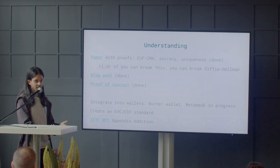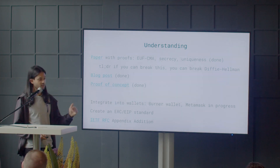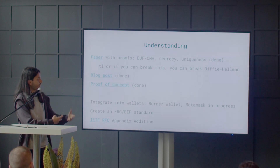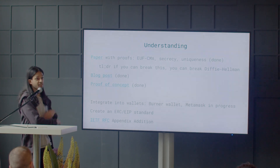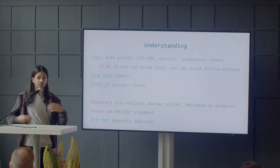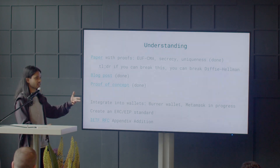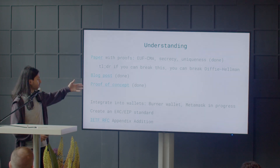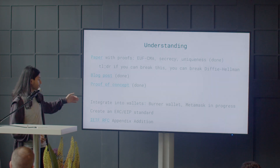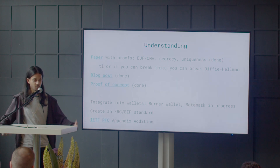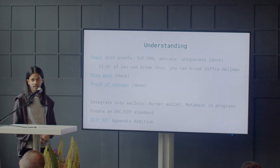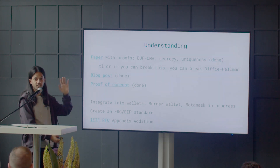To ensure our scheme is actually secure, since we're implementing it in wallets, we published a full paper with rigorous cryptographic proofs of all the properties we want to show — generally showing that if we can break one of these properties, we can break the security of Diffie-Hellman. We also have a blog post to make this notion of pseudonymity and nullifiers accessible to non-paper readers. Finally, we have a proof of concept for what a wallet implementation could look like, and we're going to work on implementing it into MetaMask and Burner Wallet, creating an ERC and EIP for a standard, and adding an appendix to the RFC for DDH-VRF standardized across all applications using secp256k1.